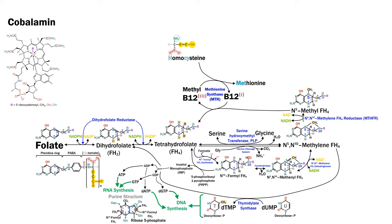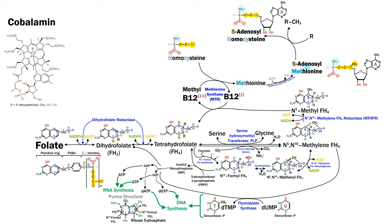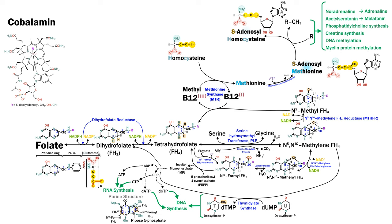Methionine can then be converted to SAM, which is the universal methylation donor. SAM provides the methyl group for numerous recipients, and in the process it is converted to S-adenosyl homocysteine, known as SAH. These reactions include numerous important functions, such as the synthesis of adrenaline from noradrenaline, melatonin, phosphatidylcholine, and creatine. It also includes all of DNA methylation — one of the primary epigenetic modifications — as well as the methylation of myelin proteins, which are essential for the integrity of myelin sheaths of neurons.